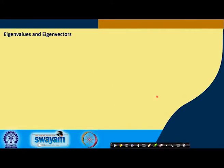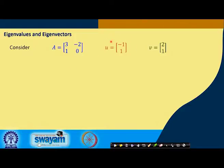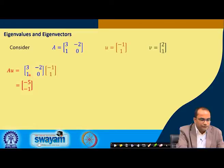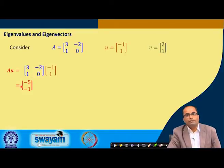What are the eigenvalues and eigenvectors of a matrix? Let us consider this simple 2x2 matrix A given by [3, -2; 1, 0], and two vectors: u = [-1, 0] and v = [2, 1]. If we compute the product A times u, we get [-3 + 0, -1] = [-5, -1].